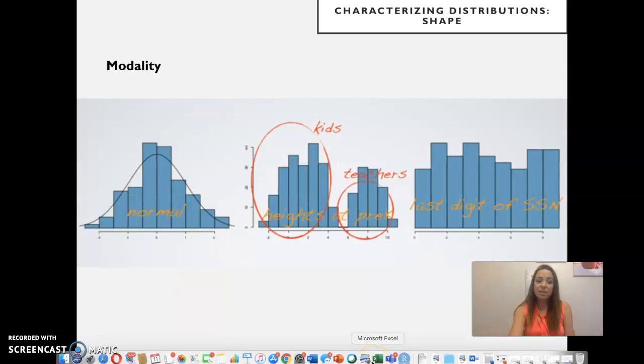And here is the example of the distribution I was just talking about, distribution of heights at pre-K. So you'd have the kids kind of here and the teachers kind of separate with higher heights more frequent for them. Another example for a uniform distribution would be if we looked at the last digit of social security numbers of people in the U.S., each digit is equally likely to occur. If that's the case, you would get something like this.